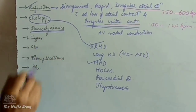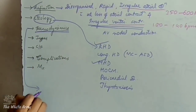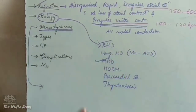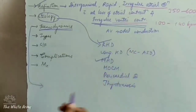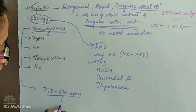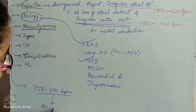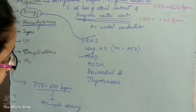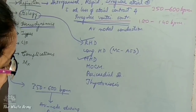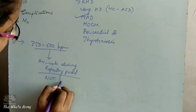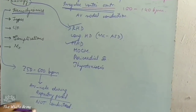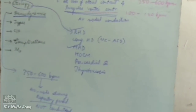The hemodynamics of atrial fibrillation: there are irregular atrial stimulations where the impulses from the atrium are at the rate of 350 to 600 beats per minute. These impulses are conducted to the AV node during the refractory period, so whenever an impulse reaches the AV node during the refractory period, that impulse is not conducted. Hence, the ventricle will contract at the rate of 100 to 140 beats per minute, irregularly.